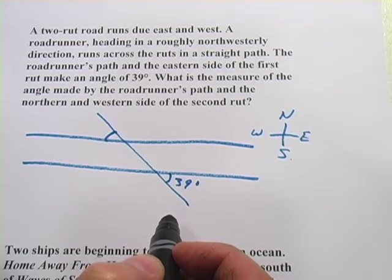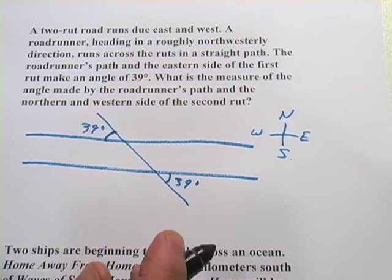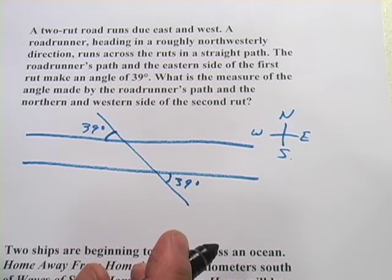And what you should recognize from this transversal situation is that these are alternate exterior angles, and they're going to be the same. So the answer for this one would just be 39 degrees. No calculations to do there at all.